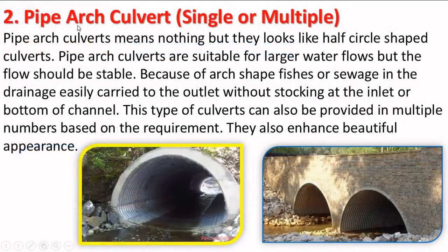Next is pipe arch culverts — single or multiple. Pipe arch culverts look like half-circle culverts. They are suitable for larger water flows, but the flow should be stable. Because of the arch shape, fish or sewage in the drainage is easily carried to the outlet without stocking at the inlet or bottom of the channel. This type of culvert can also be provided in multiple numbers based on requirement. They also enhance the beautiful appearance.